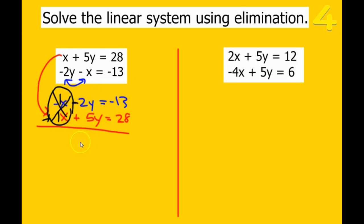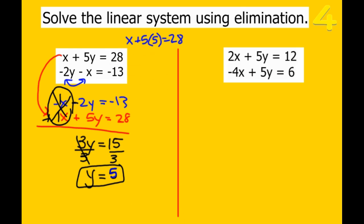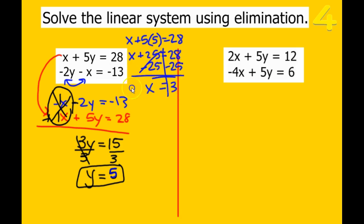28 minus 13 equals 15 — 28 minus 10 is 18, minus 3 more is 15. Divide by 3, and 15 divided by 3 is 5, so y equals 5. Plug back into the top equation: x plus 5 times 5 equals 28, so x plus 25 equals 28. Subtract 25, and x equals 3. So our solution is (3, 5).